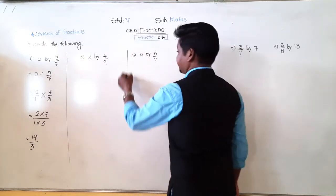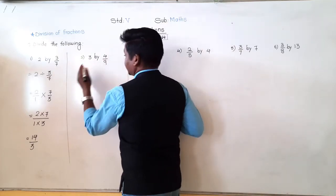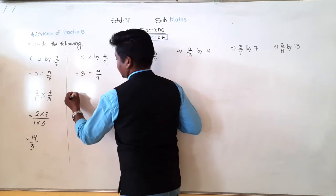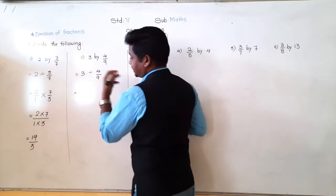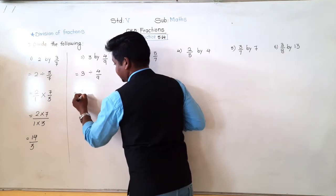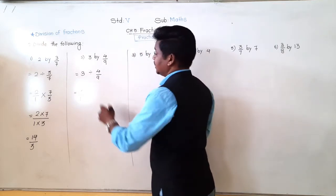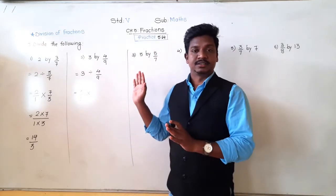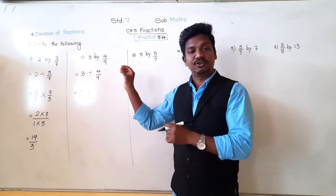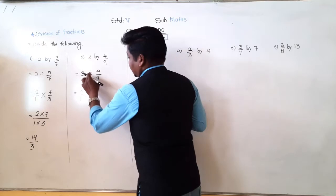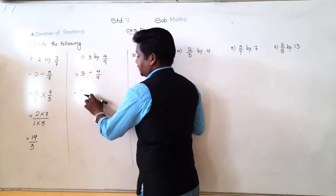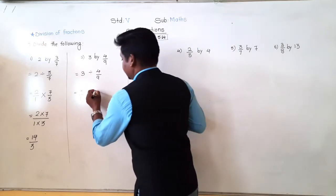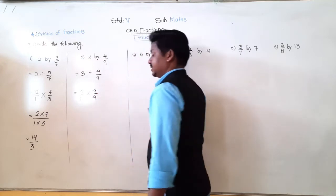Second: 3 by 4 upon 9, that means 3 divided by 4 upon 9. Division means multiplication by its reciprocal. So I write the first number as it is — 3 with denominator 1. Instead of division, write the multiplication sign. Follow the steps properly and watch the video very carefully. The next fraction will be changed into its reciprocal, that is 9 upon 4.